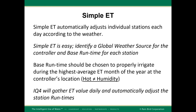Simple ET automatically adjusts individual stations each day according to the weather received from a global weather source. It uses weather forecast data in conjunction with a station-based runtime to calculate the required ET for the irrigation system. Setting up Simple ET is easy: identify a global weather source for the controller and a base runtime for each station. The base runtime should be chosen to properly irrigate during the highest average ET month of the year at the controller's location.